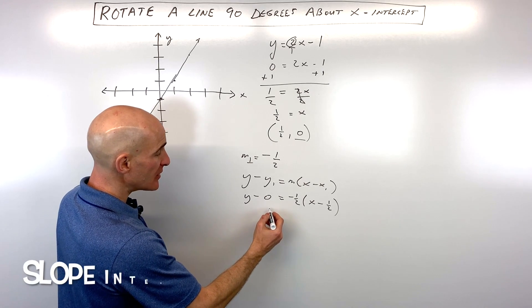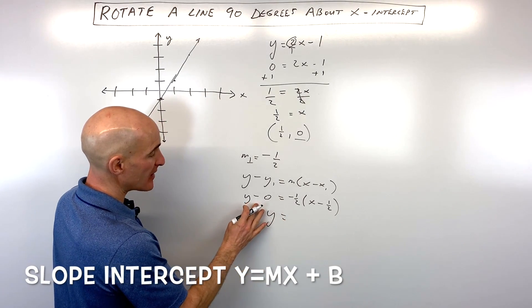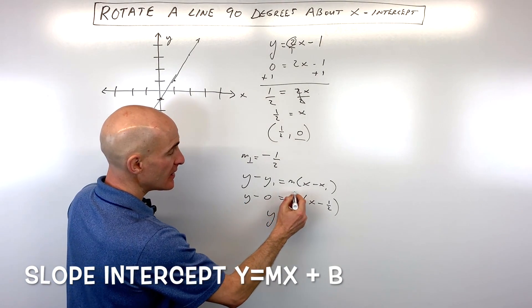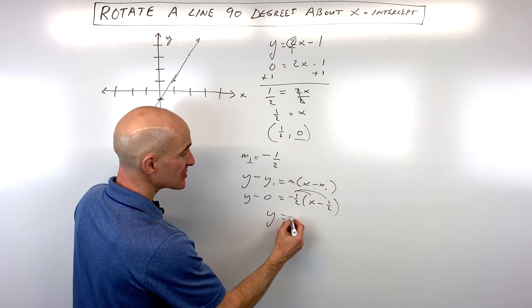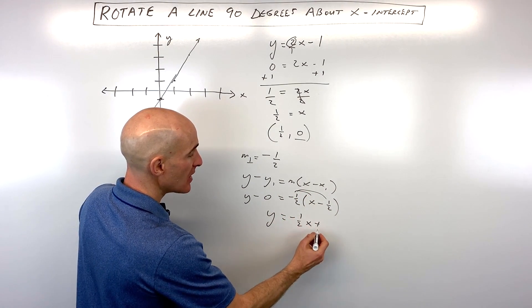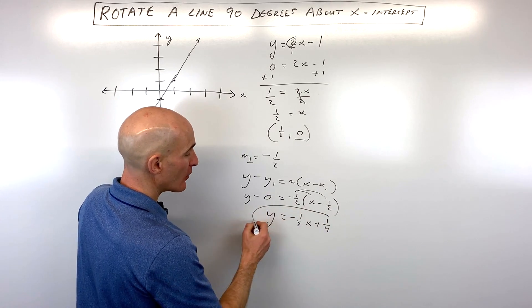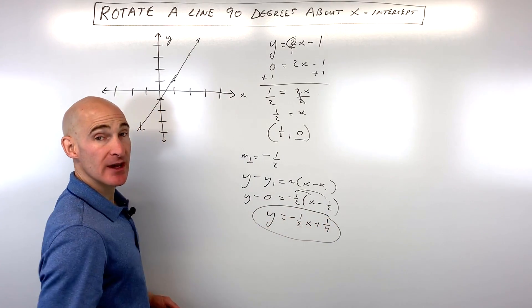Now, we can rearrange this into slope-intercept form by getting the y by itself. y minus 0 is just y. Distributing the negative 1 half, that's going to come out to negative 1 half x plus 1 fourth. And now we have the equation line in the slope-intercept form.